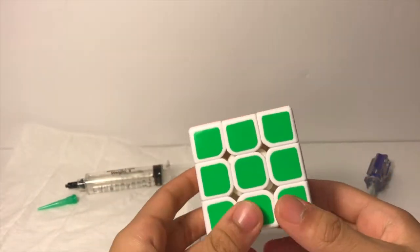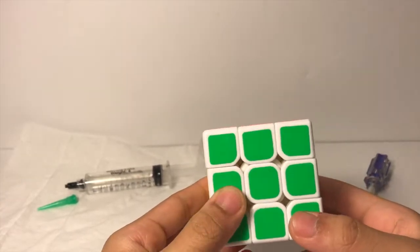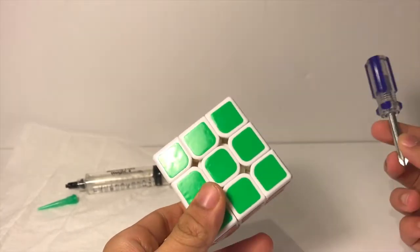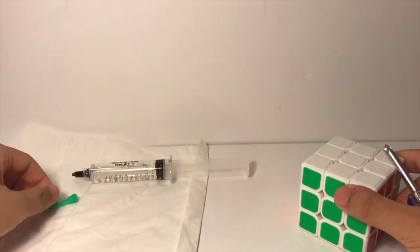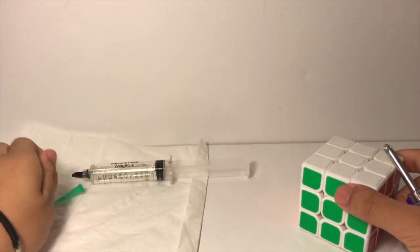You're going to need the cube you want to lube. This method works for all odd layered cubes, a screwdriver that fits the screws that your cube has, and some lube, hopefully in a syringe-like container.